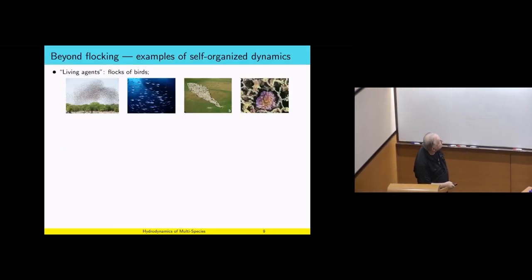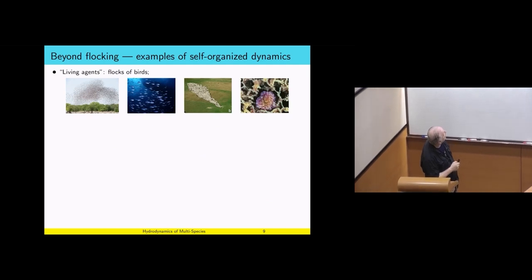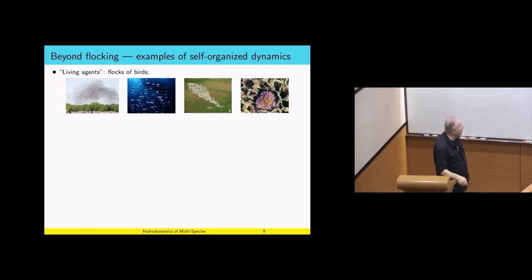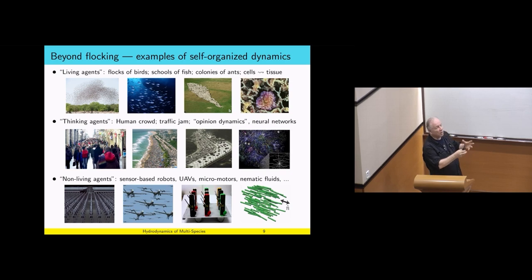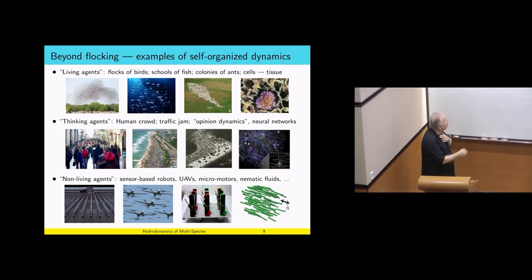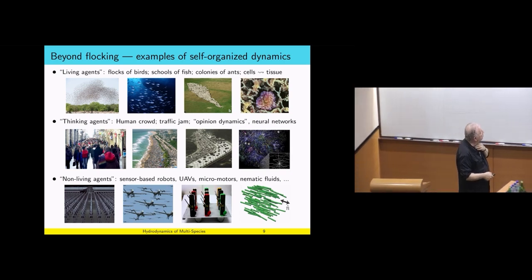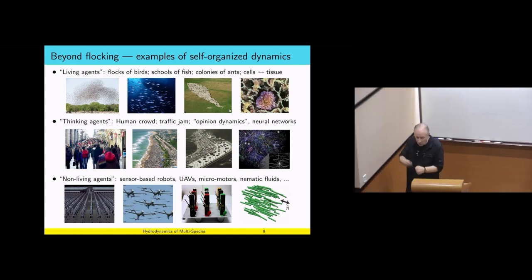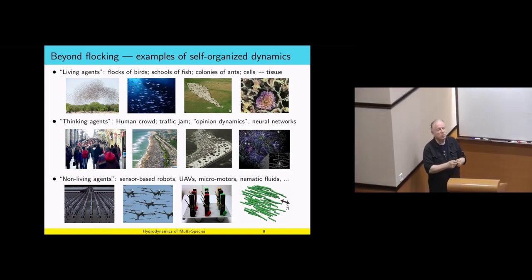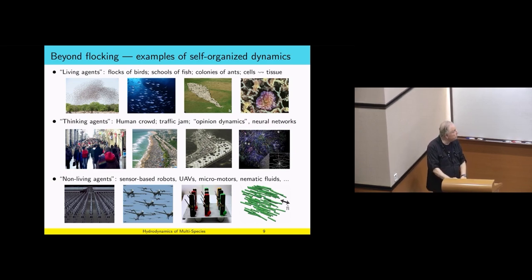The important thing is that there is no central control. It's just the interaction between different species, and something will emerge from these interactions. Here is a canonical slide of living agents: birds, fish, sheep, or cells — all examples from living agents, in contrast to thinking agents. You see a crowd which has somehow self-organized on a larger scale, or non-living agents like sensor-based robots or micromotors. In all these cases, the question is always the same: local interactions in the small give rise to larger patterns in the large.